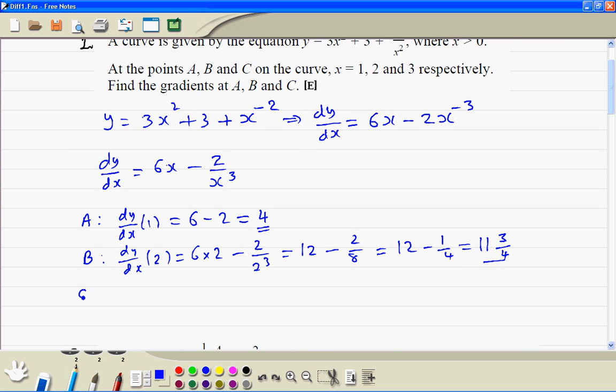Point C, we substitute x equal to 3, 6 times 3 minus 2 divided by 3 cubed. So that's 18 minus 2 divided by 27. We can rewrite that as 17 plus 1 minus 2 divided by 27. Now work out this first. So that's 27 minus 2 is 25 over 27. So the final answer is 17 and 25 over 27.